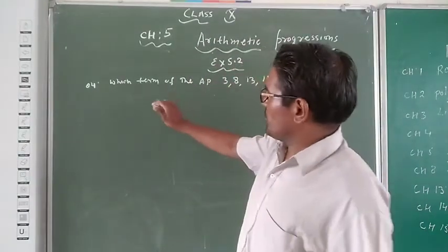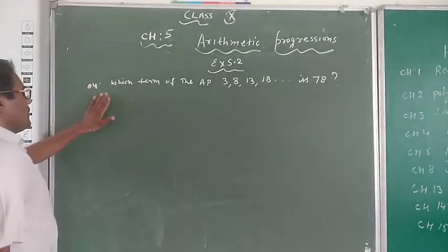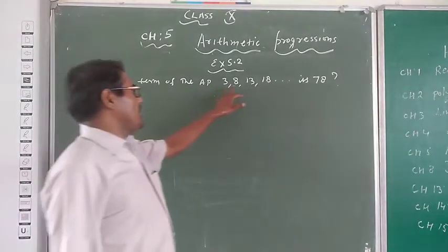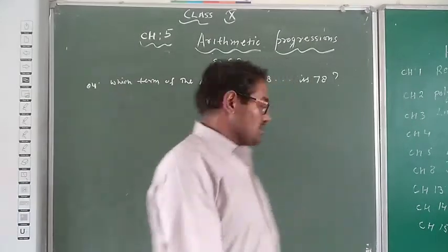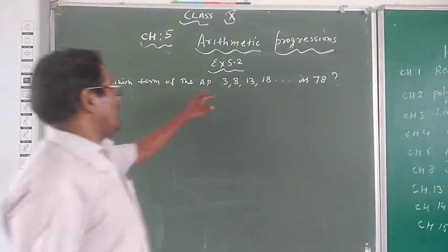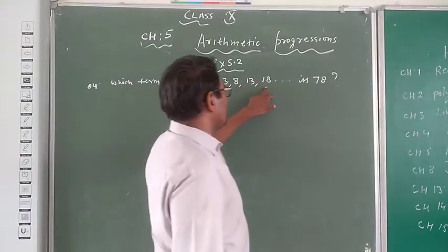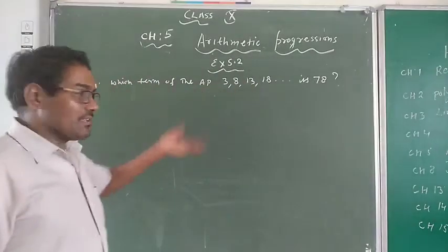Exercise 5.2, question number 4 from NCERT: which term of the AP 3, 8, 13, 18... is 78? Okay, this question is asking which term of the sequence 3, 8, 13, 18... is 78.